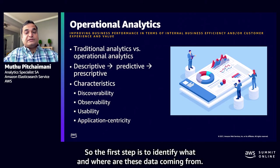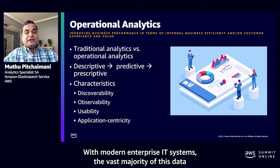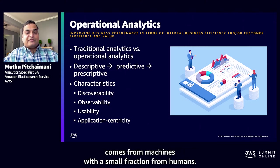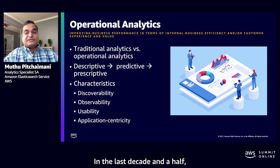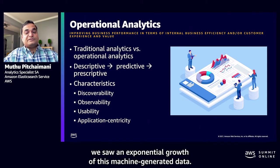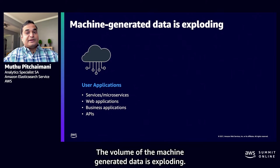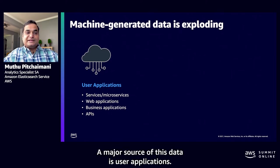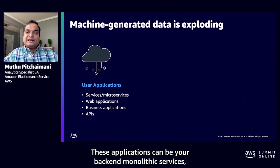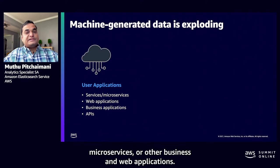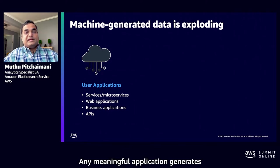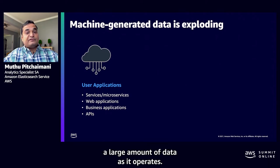The first step is to identify what and where this data is coming from. With modern enterprise IT systems, the vast majority of this data comes from machines, with a small fraction from humans. In the last decade and a half, we saw exponential growth of machine-generated data. The volume is exploding, and a major source is user applications — these can be back-end monolithic services, microservices, or other business and web applications. Any meaningful application generates a large amount of data as it operates.